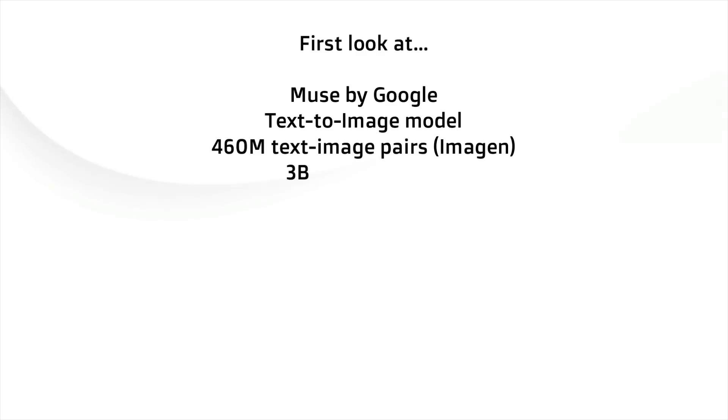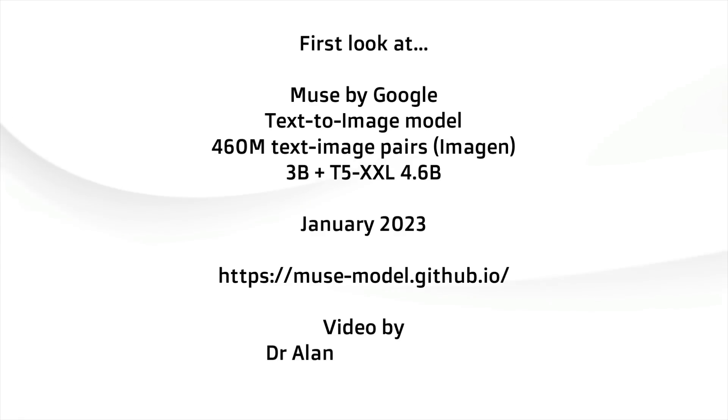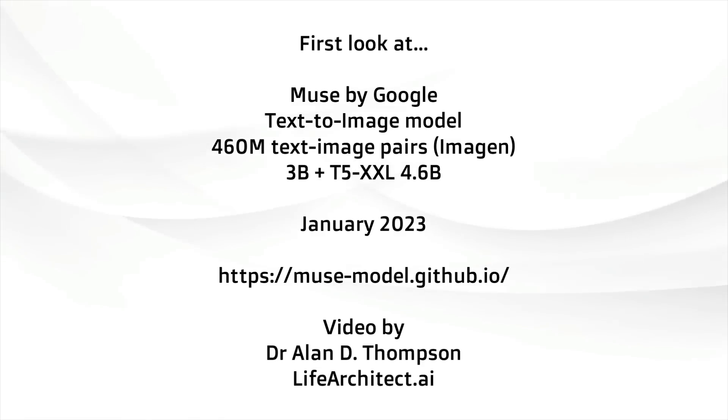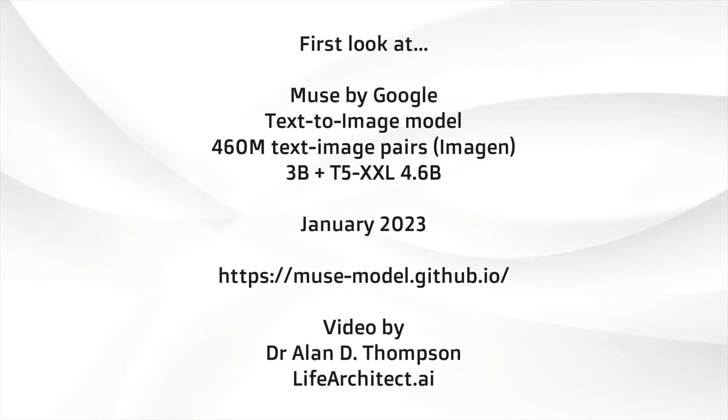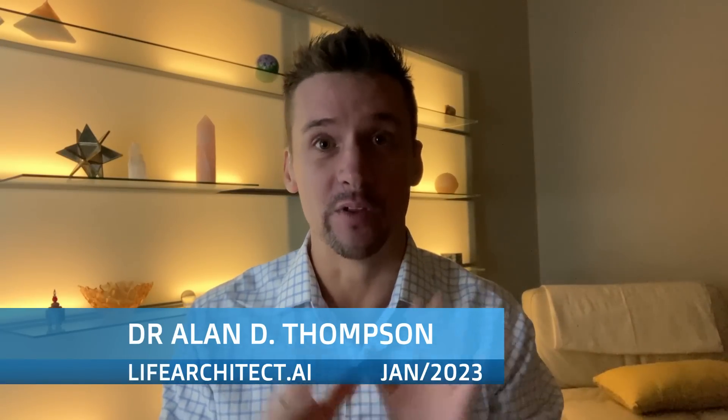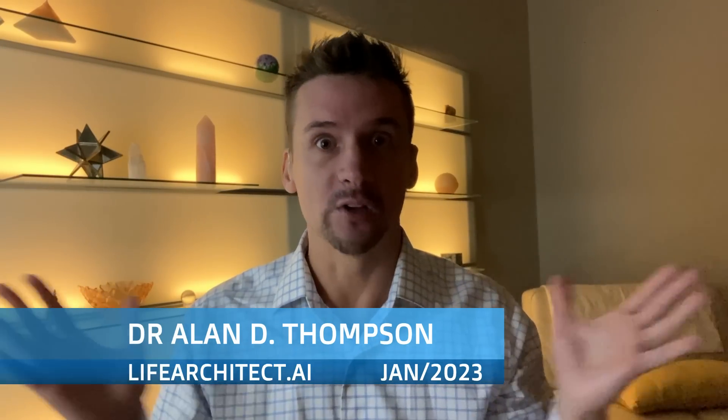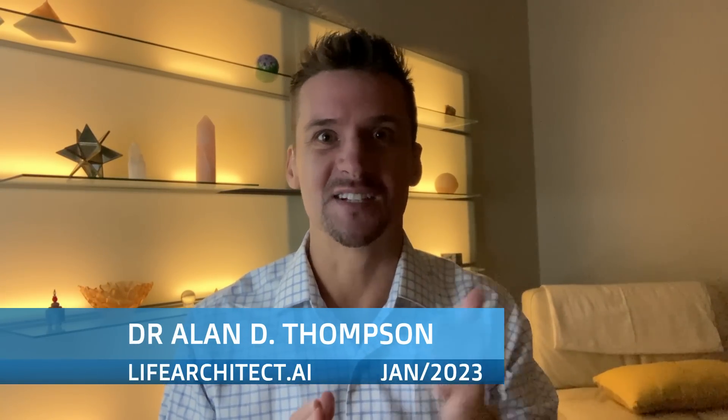It's 2023! Google Research have brought out Muse, a new text-to-image model. 460 million text-to-image pairs from Google Imagine, and they're using the T5XXL 4.6 billion parameter model. Welcome to the very first major model released for 2023, released last night California time. We only had to wait about 48 hours, and we got the very first model released by the amazing guys there at Google Research.